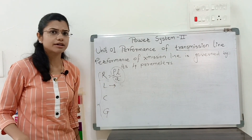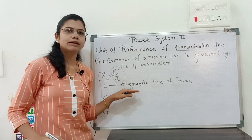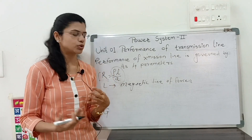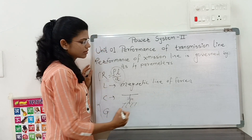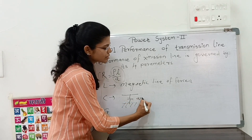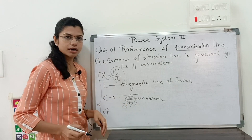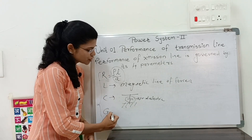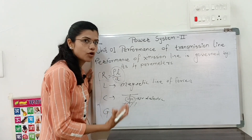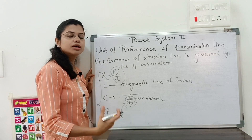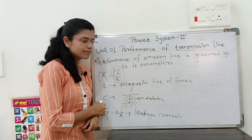Inductance is formed due to the magnetic lines of forces around the transmission line. Capacitance forms between the transmission line and earth, with air as a dielectric medium. Conductance G is the opposite of resistance — whereas resistance opposes the flow of current, G allows leakage current to flow. These are the four parameters present in a transmission line.